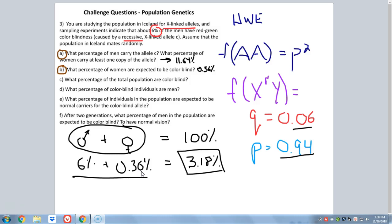3.18% of the entire population in Iceland is colorblind. Yes, we understand that for the males, it's 6% of all the males. And for the females, it's 0.36% of all the females. But if you were to lump all those people together into one room and ask how many of these people, gender aside, are colorblind, 3.18% of them are colorblind. So this is 3.18%.